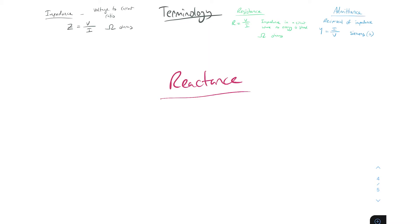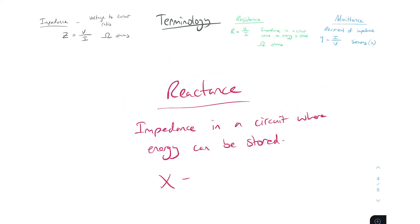Reactance is impedance in a circuit in which energy is stored. So resistance is impedance in a circuit where there's no energy stored; reactance is impedance in a circuit where energy can be stored. Reactance is denoted with X. You may have seen XC or XL in your studies so far. Reactance X equals V over I, and same as impedance and resistance it's measured in ohms.